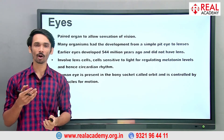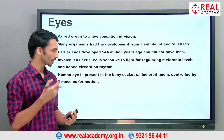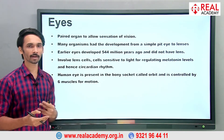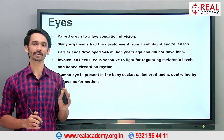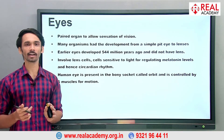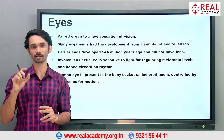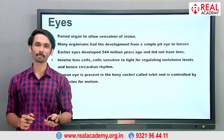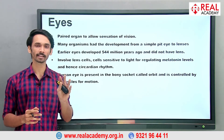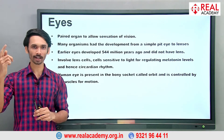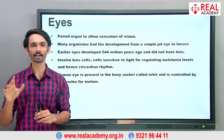Now, how did vision basically start or develop? We don't know exactly which was the first organism with eyes, but we do know it was something like hydra or coelenterates — the animals we learned about in 9th standard ICSE. Hydra had sensory eyes: whenever hydra got light, it would move away or show motion in response to light.